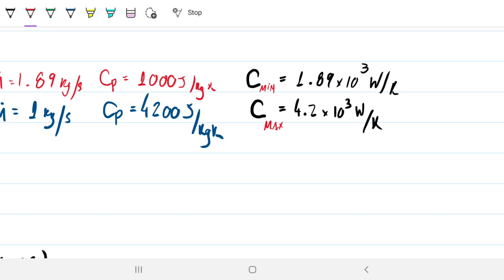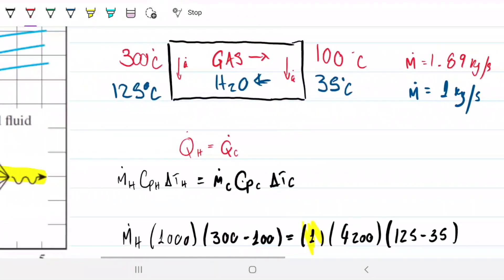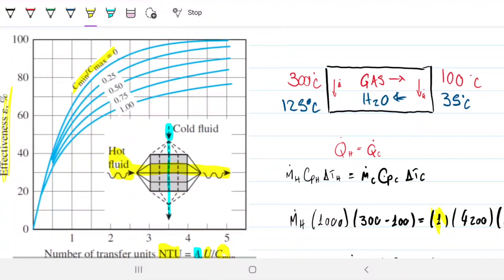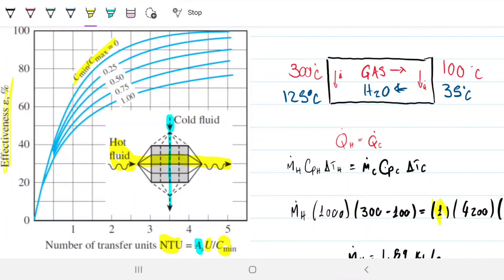If you guys recall, our NTU method, what we're trying to find is the area. So to find area, we need the overall heat transfer coefficient, which we have already. We need the capacity rate, the smallest one, which we have already, and we need the number of transfer units, which we don't have. So if you want to find the number of transfer units, we're going to be using this graph for which we need the ratio between the capacity rates and the effectiveness.